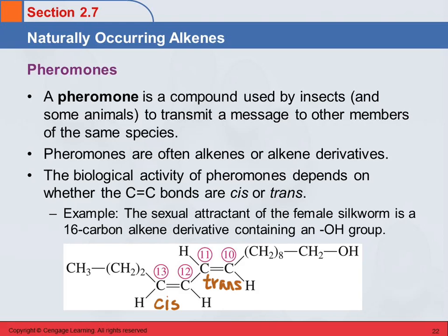So if you had this same compound but this double bond was cis instead of trans, the moths would not be attracted to it — or if they were, it wouldn't be as intense. Your book has more details about that, but biological systems make use of these very tiny differences in structure.